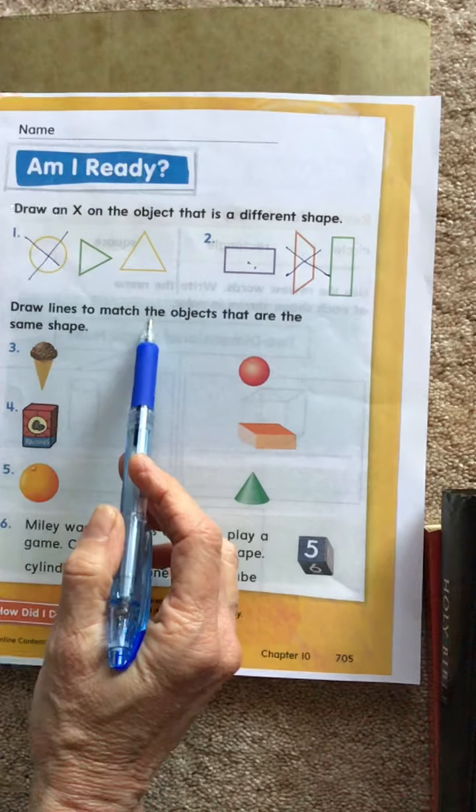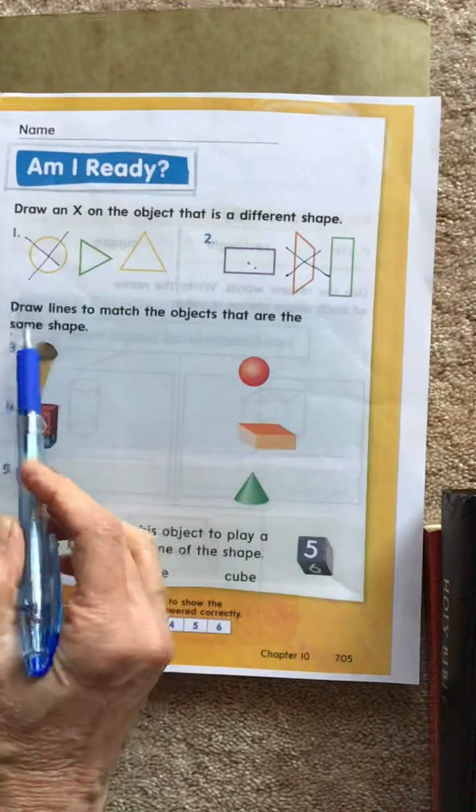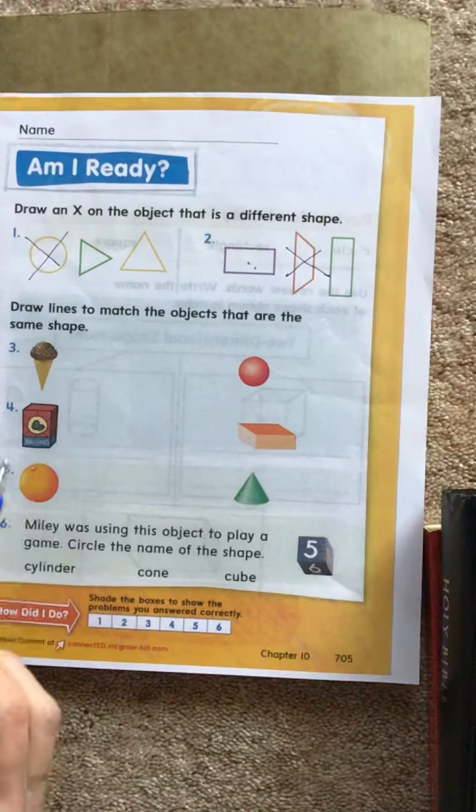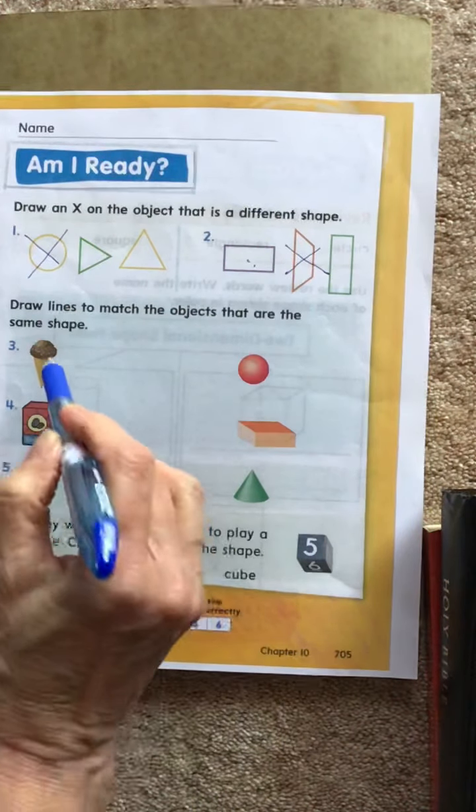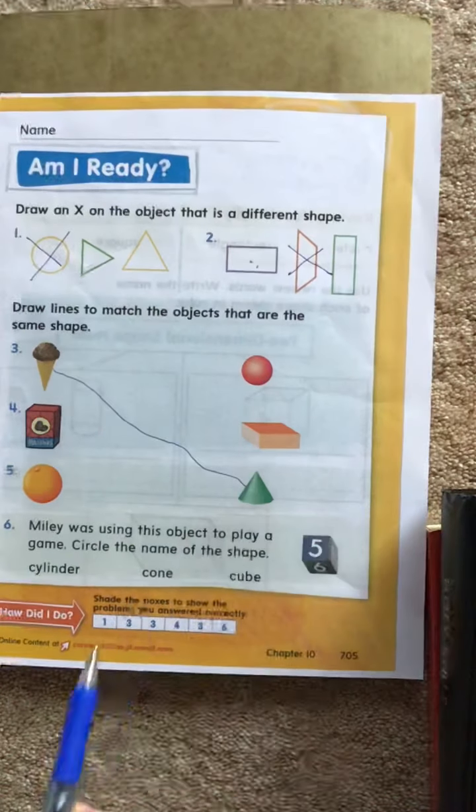Okay, draw lines to match the objects that are the same shape. What is this? Which of these shapes is it like? Right.